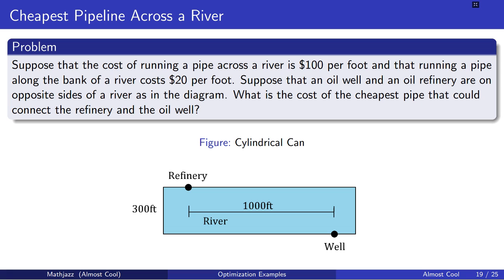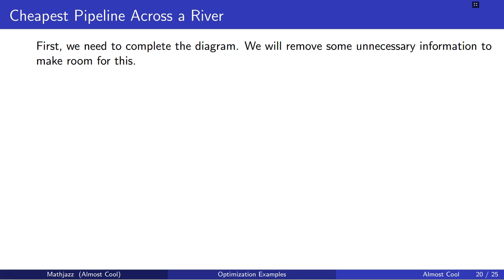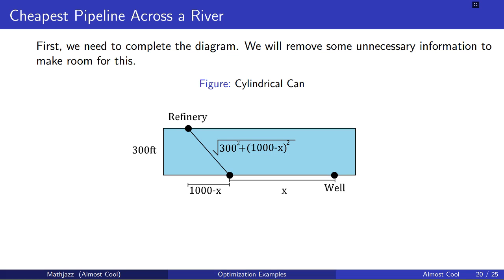So what we're going to have to do is we're going to remove some unnecessary information from the diagram to make room for the particular distances that we want to observe. Here is a distance x between the well and a point where we begin to cross the river.